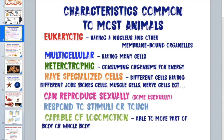Animals primarily reproduce sexually, though some can reproduce asexually — including starfish, sea stars, sponges, and some cnidarians like the hydra. All animals respond to some sort of stimuli or touch, and they are capable of locomotion, or movement, at some part of their life cycle.